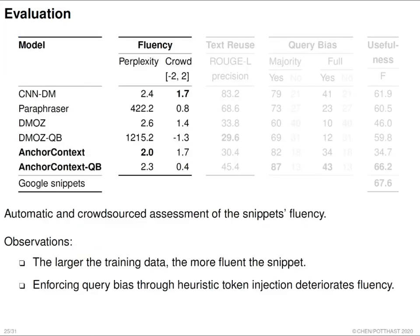Let's look at fluency. Fluency can be measured automatically using perplexity from a pre-trained BERT language model — lower is better — or manually via crowdsourcing, where judges score between minus 2 to 2, with higher being better. We find that larger datasets generally produce more fluent snippets, confirmed by both perplexity and crowdsourcing scores. However, forcing the model to generate query-biased snippets sometimes makes fluency slightly worse — the anchor context query-biased model is slightly worse than the anchor context model alone.